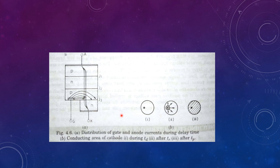As seen in this slide, during delay time TD, the anode current is flowing through a very small region. During rise time, the anode current has spread a little — as seen here, it is flowing through this wider region. Also, the anode voltage is very high. Since the voltage is high and the current is high, and the region in which this is occurring is very small, local hotspots can be formed and the device can get damaged during high rise times.